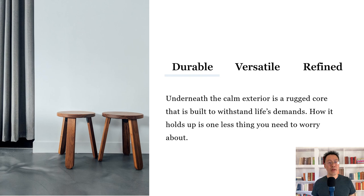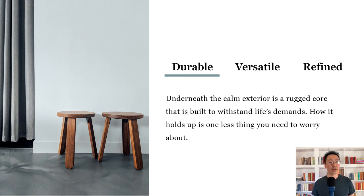Here's another example where high contrast is important: a line under the word 'durable' indicates the selected trait being drilled into. If you can't see that line, it's hard to understand the content. Again, Accessibility Checker can't detect this automatically, so use the manual process with Color Contrast Analyzer to detect and fix the issue by choosing a darker color. Now you can easily see which trait is selected.